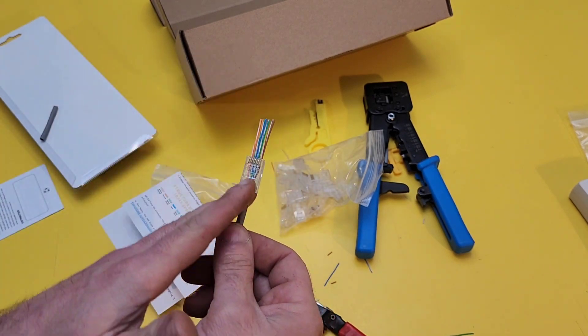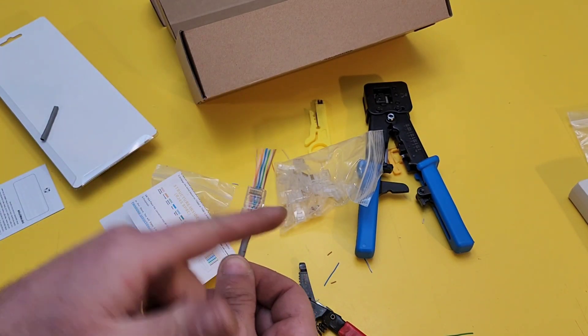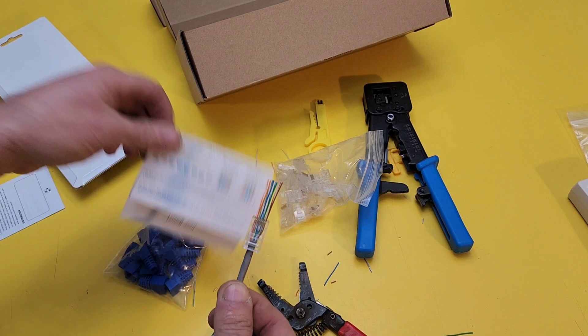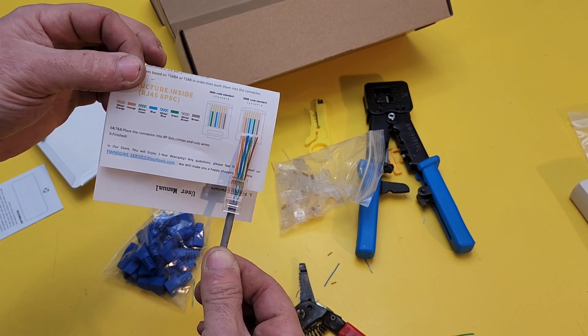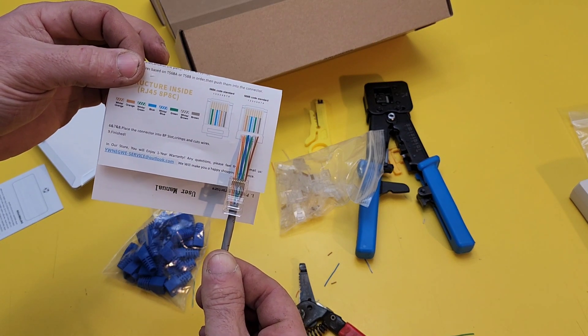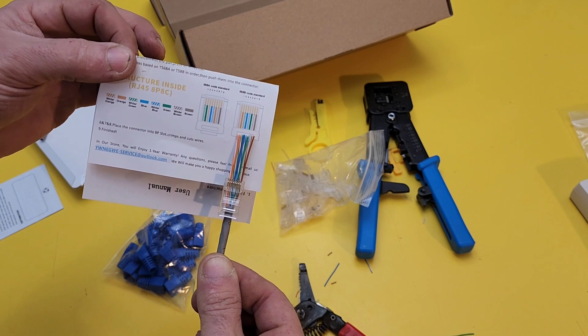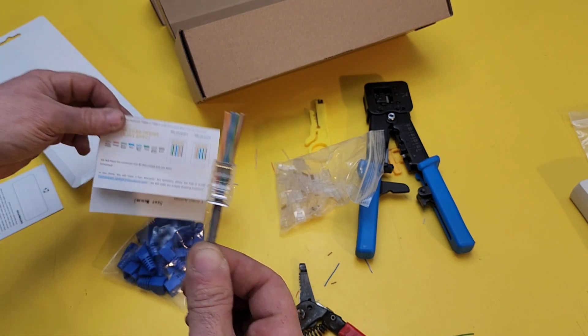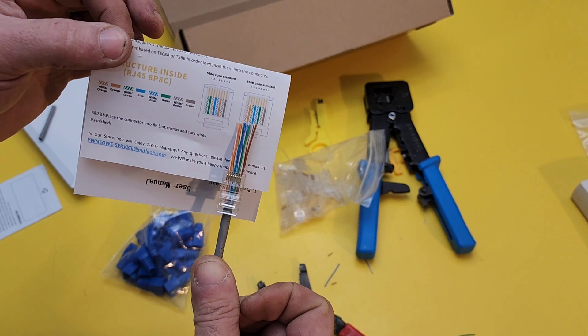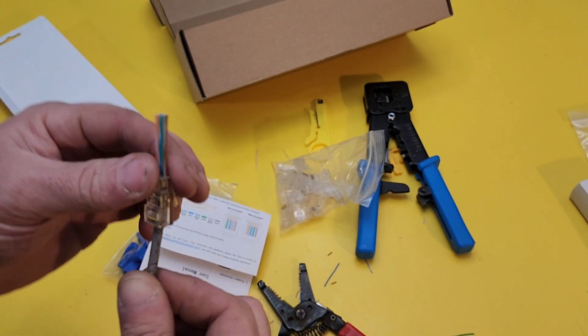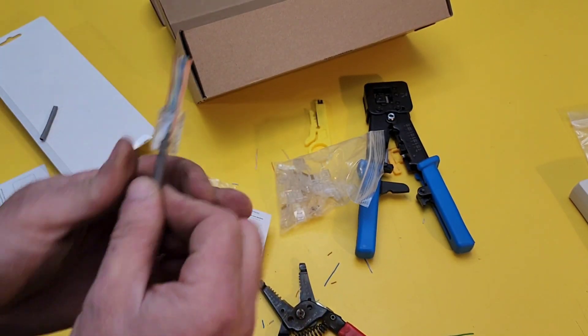Another way of doing that is starting from 1 on this side and going from 8 there. And then it kind of matches up just like that. So you've got orange-orange. Green. Blue-blue. Green. Brown-brown. Again, if you're using the B version. Which is the version that I use.